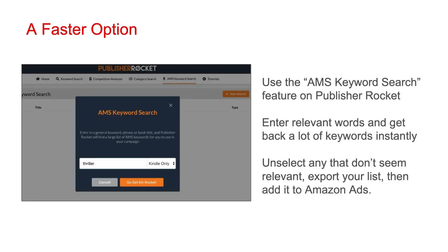A much faster option is the tool Publisher Rocket. Publisher Rocket has an AMS keyword search feature specifically for this task. Enter relevant words into Publisher Rocket and get back a lot of keywords instantly. Certain keywords may not be a fit for the ad you want to run — you can easily unselect those before you export your list. Once you export your list, which comes out in spreadsheet format, you can easily upload it to Amazon ads to target all of its keywords.